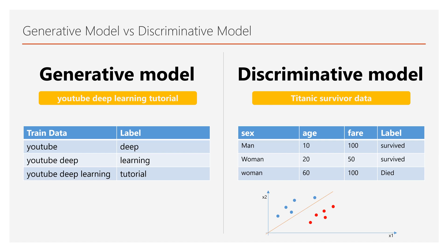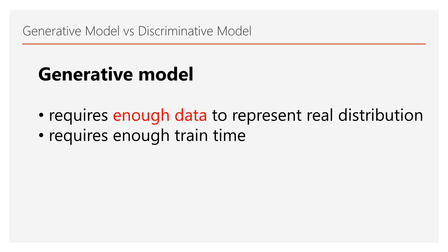Discriminative Model works well with small datasets. Small data is comparatively easy to human-label and comparatively easy to find patterns during model training. However, the Discriminative Model can be easily overfitted without enough data, as the question mark position example illustrates. Generative Model is really powerful with enough data. Obviously, Generative Model training takes longer since it requires more data. If you want to understand the mathematical detail, you can watch my Generative Model versus Discriminative Model video for more detail.